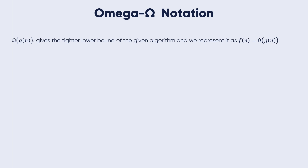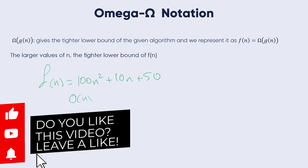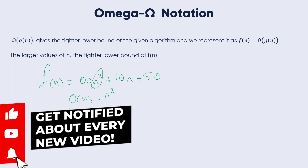At larger values of n, the tighter lower bound of f(n) is g(n). For example, if we consider f(n) = 100n² + 10n + 50, the O notation for this function has the highest term n², and the Omega notation of this function is also considered.